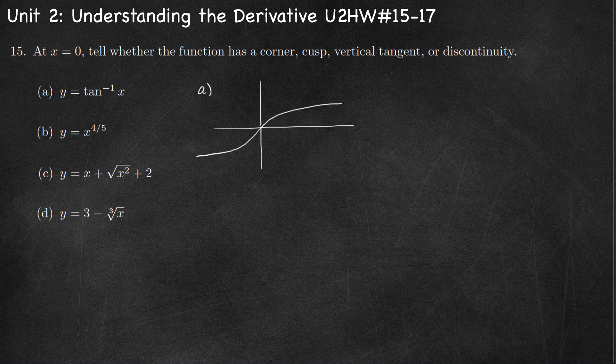If I were to draw the tangent line to the graph at the point where x is zero, it's going to look about like that. It has a slope of one. So for part A, the answer is actually none of the above.